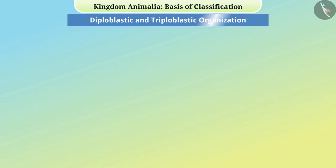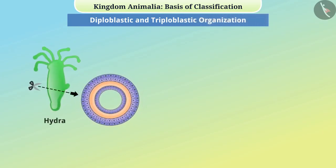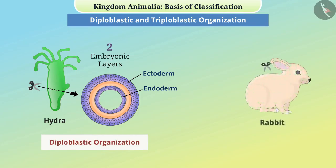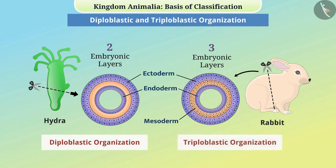In some animals, like hydra, cells are arranged in two embryonic layers — such organization is called diploblastic. In some animals, such as rabbits, cells are arranged in three embryonic layers — such organization is called triploblastic.